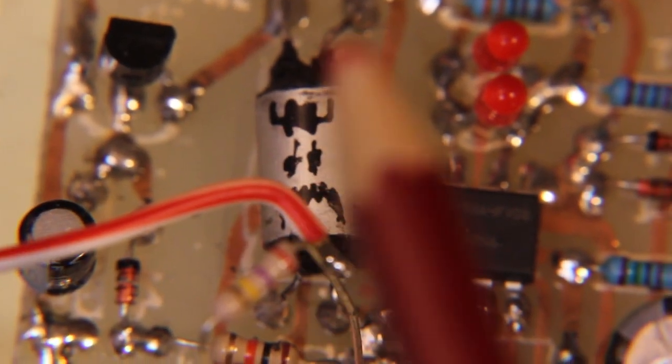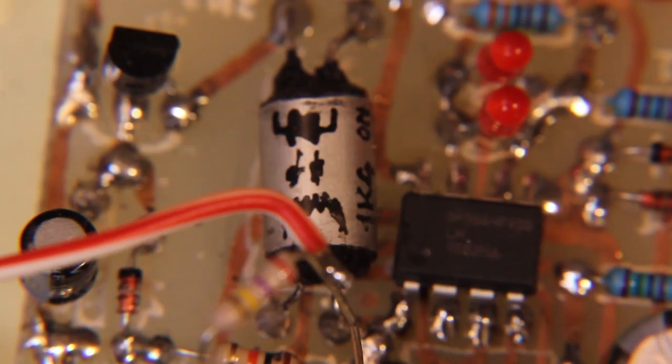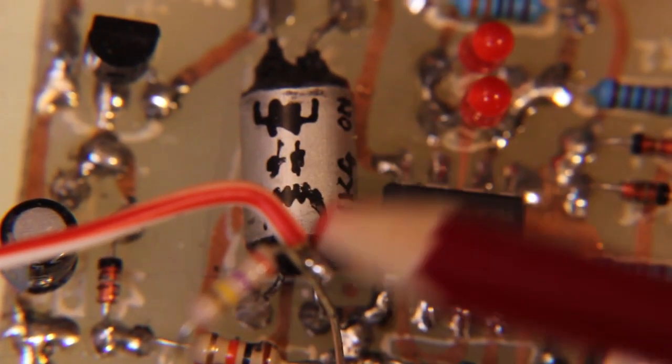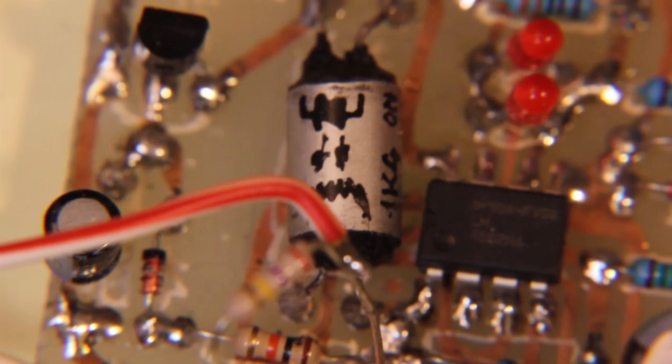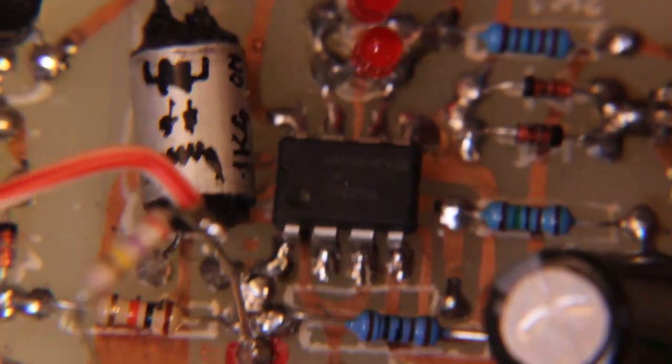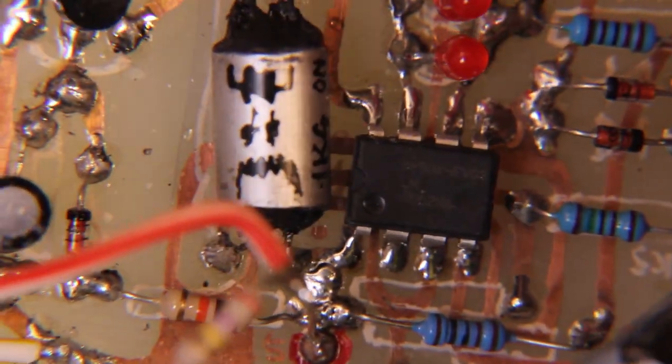Of course some care is required not to smell the resin while soldering the part on the printed circuit board. Of course you can use other solutions to keep the LED and the photoresistor in place such as a heat shrinking tube.